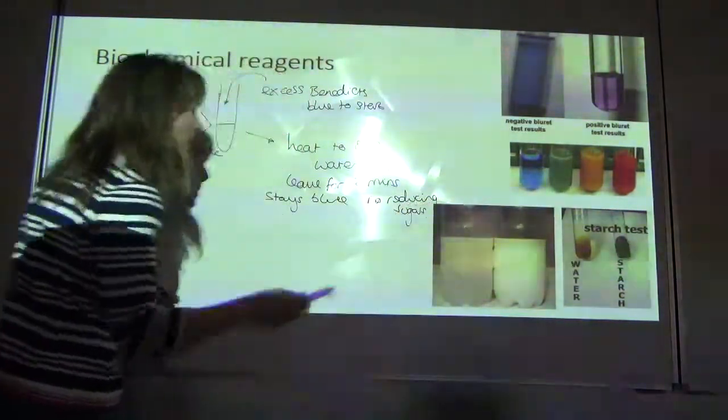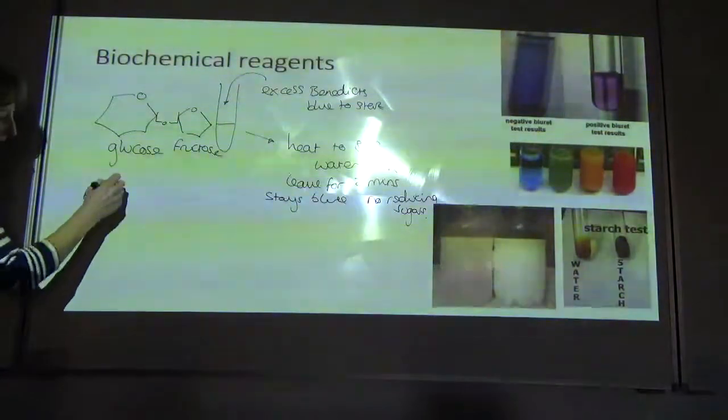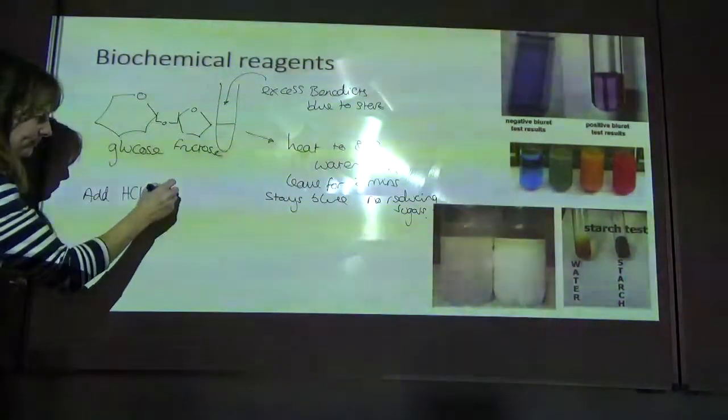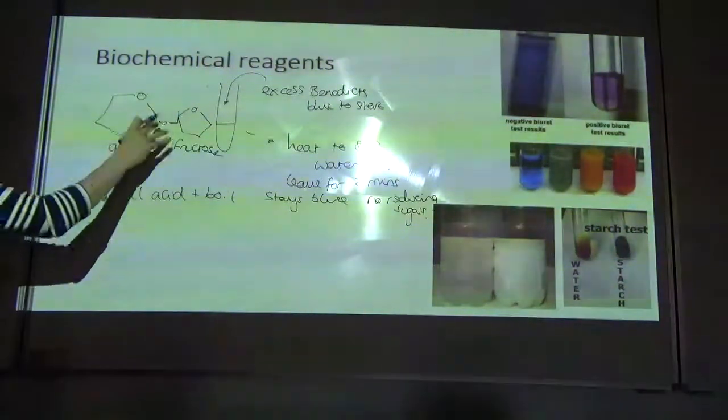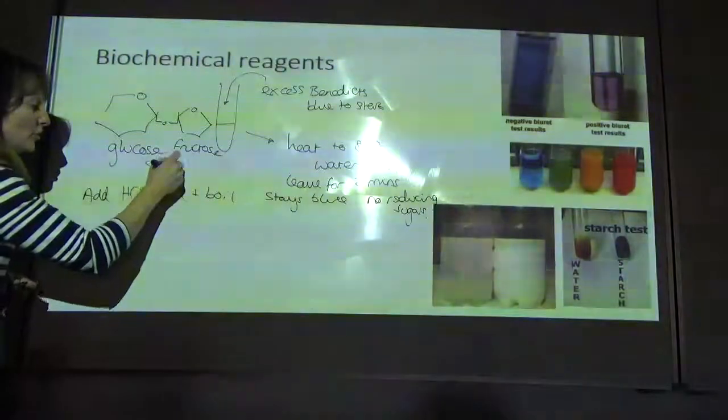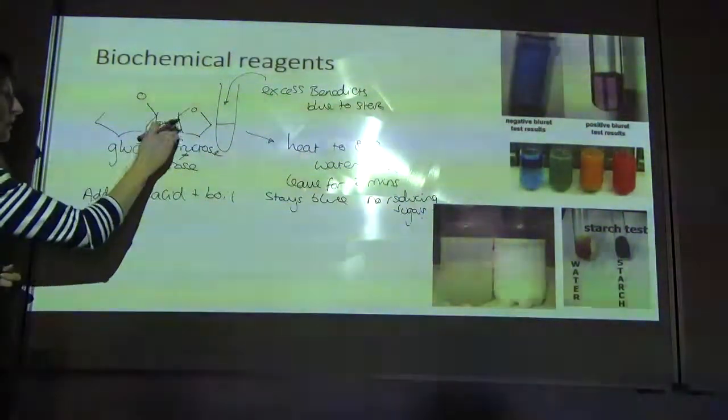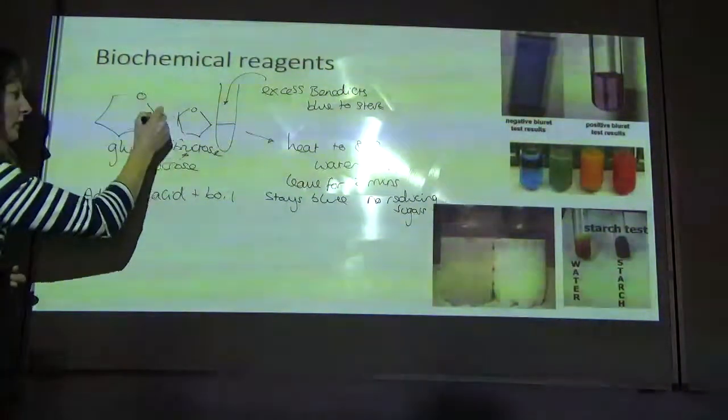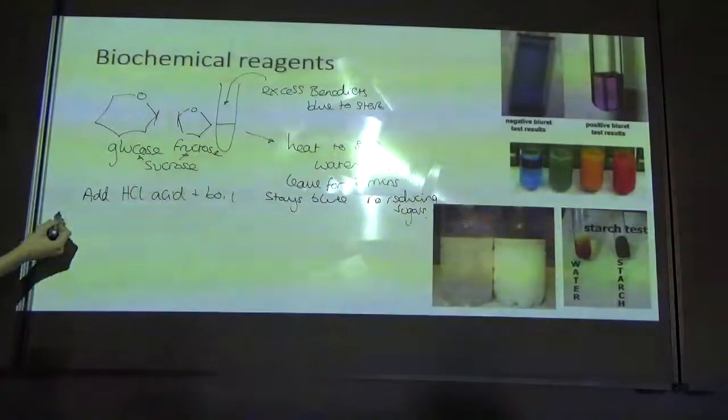Then you repeat the whole process again. But this time what you're going to do is you're going to add acid and boil. And what that will do is that will break that bond. So you will hydrolyze the sucrose, which is your non-reducing sugar, to form glucose and fructose. So that will give you two then reducing sugars. That's what that step is for.